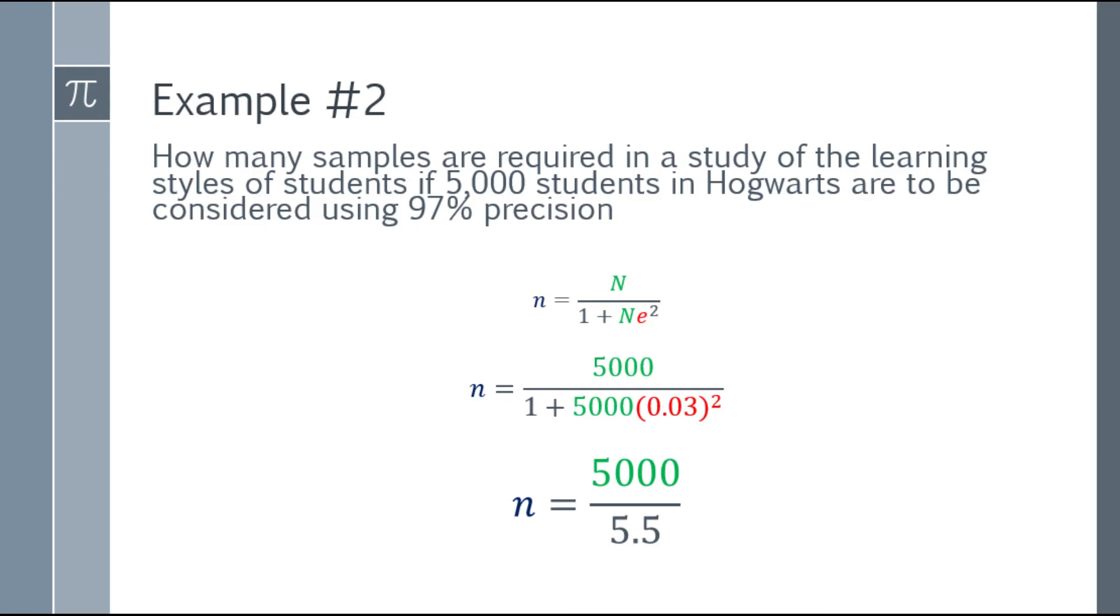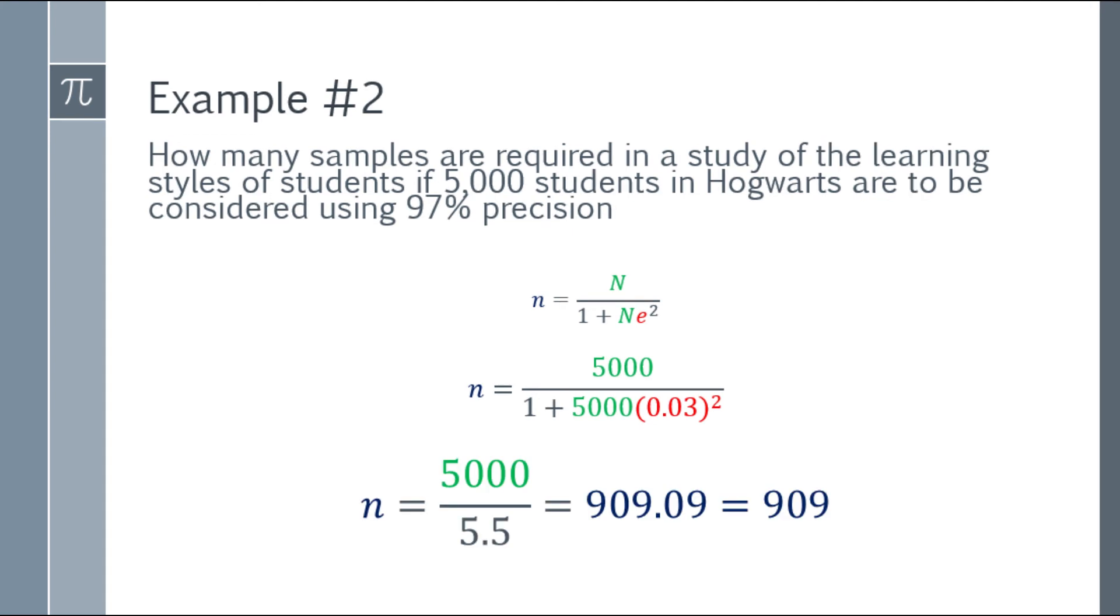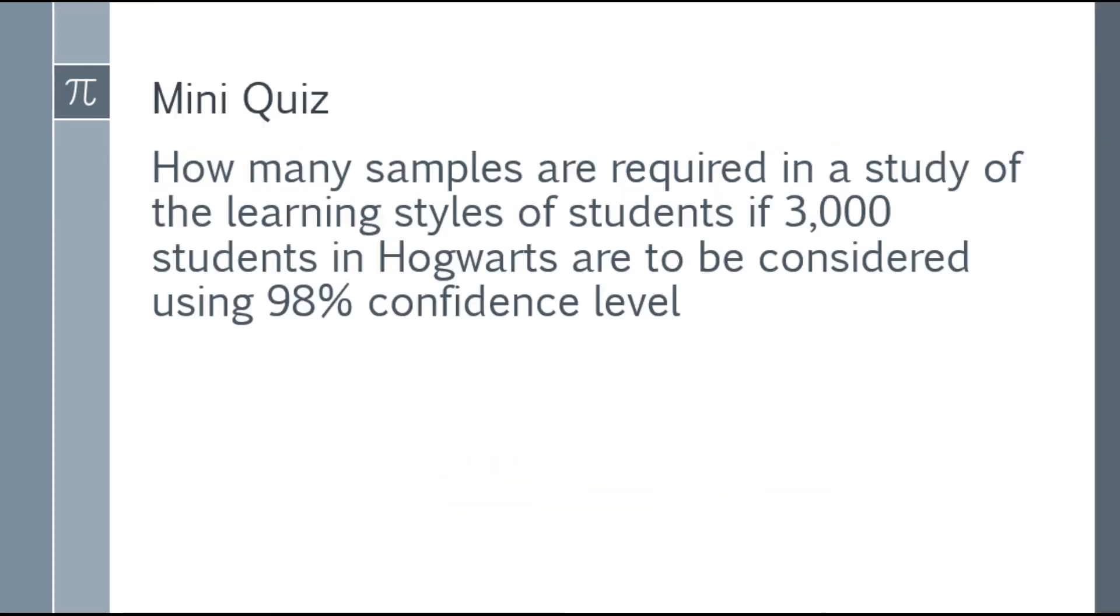So algebraically, if you're going to simplify it, 5,000 divided by 5.5, that will be 909.09. And again, we have to estimate it, so that will be 909.